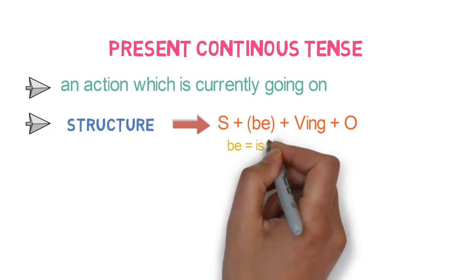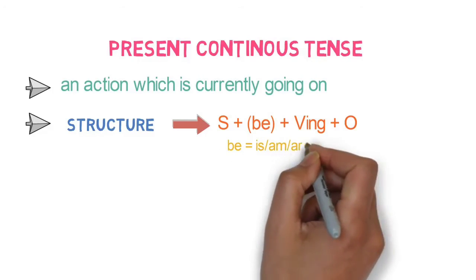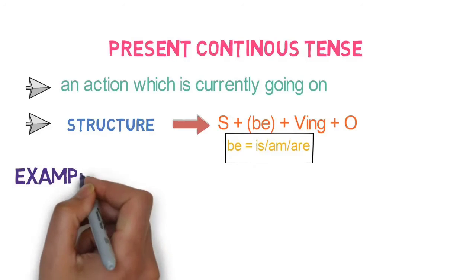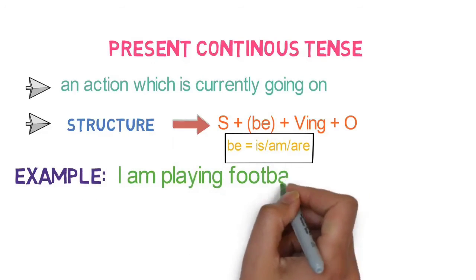Be verb here are is, am and are. It is selected depending on the first person, second person and third person. For example, I am playing football right now.